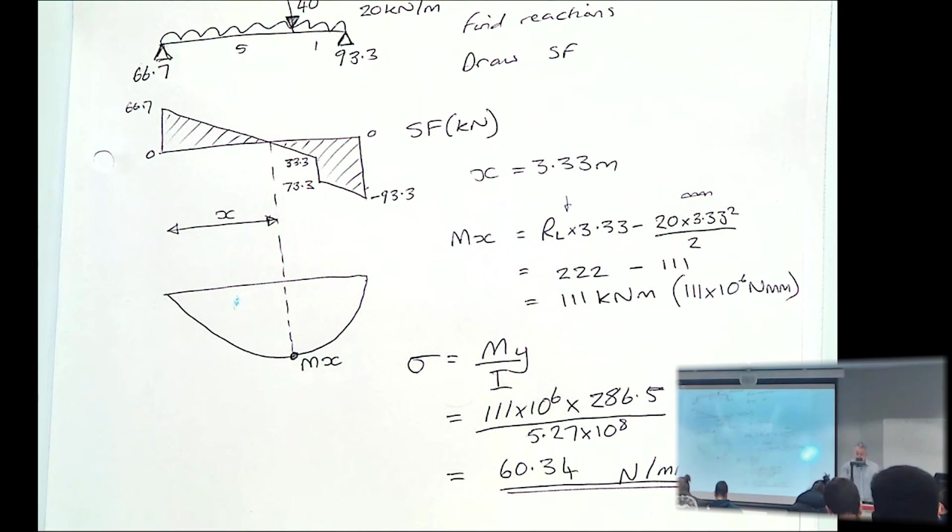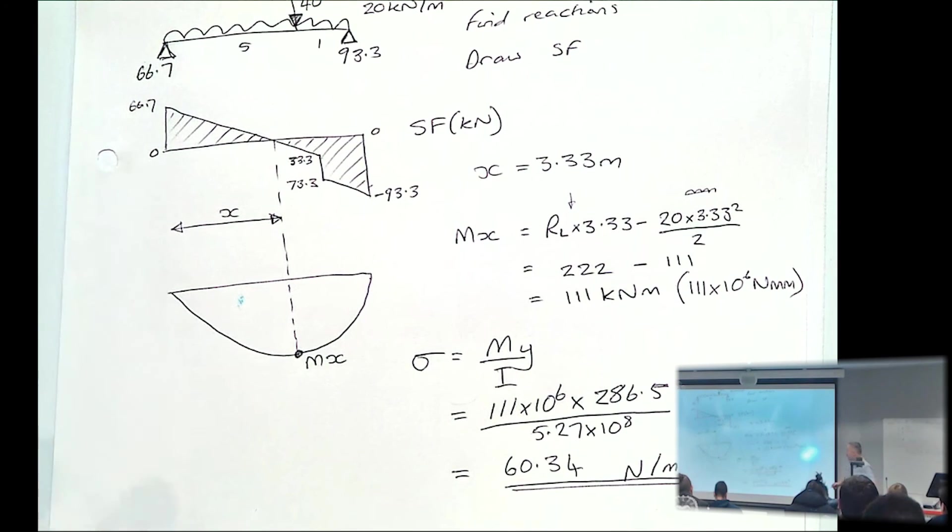Once you know the stress of the material, the maximum stress, then you can choose a material that has that stress capability. Like steel has like 205, or structural steel is 255. So steel is too large for that. Like you could start off with a value of 255, but if you knew that you were going to use steel, you could work all the way back and find out your I value. That's another thing that you could have done.